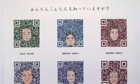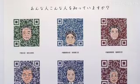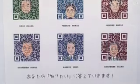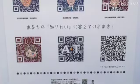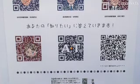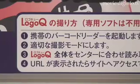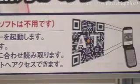When a user comes to the shop and swipes the code with the reader, it matches the distributed Logo Q code with the user's information, and at this point it measures how many times the user has visited the store.